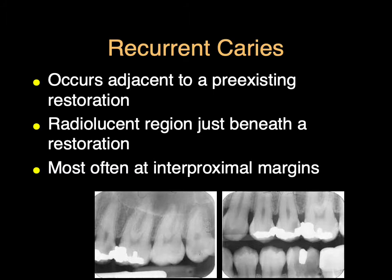Recurrent decay is decay that occurs next to a pre-existing restoration — composite, amalgam, crown, whatever — often at the interproximal margin. Our goal when replacing tooth structure is to have perfect continuity from tooth structure to restoration, but we can never be as perfect as original tooth. This makes an area that tends to be a plaque trap, and patients have to be very careful about brushing and flossing, especially when they have interproximal restorations. Many patients feel once they have a crown they don't have to worry about decay — it's the exact opposite, you're actually more prone to decay.